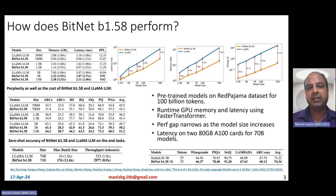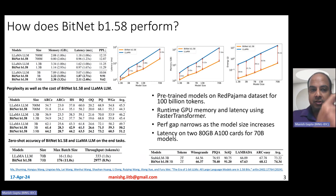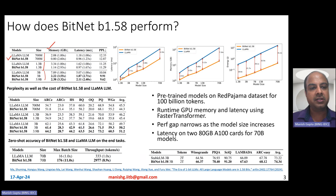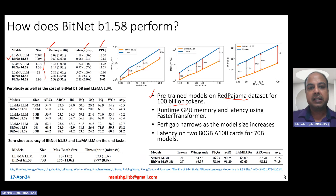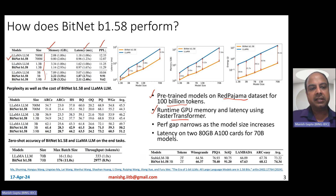How does BitNet B1.58 perform? Here is some empirical evidence. In this table, they compare BitNet models across three different sizes — 700 million, 1.3 billion, and 3 billion parameters — with LLAMA FP16 models in terms of memory, latency, and perplexity. These models were pre-trained on the Red Pajama dataset for 100 billion tokens, and latency is reported using the FasterTransformer optimization. At 3 billion size, BitNet models show about 4x memory reduction and about 3x latency reduction, but with better perplexity.